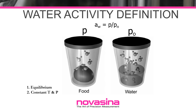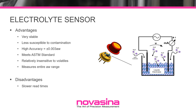Water activity is measured by equilibrating the liquid phase water in the sample with the vapor phase water in the headspace of a closed chamber, and measuring the equilibrium relative humidity in the headspace using a sensor. The relative humidity can be determined using a resistive electrolytic sensor, a chilled mirror sensor, or a capacitive hygroscopic polymer sensor. Instruments from Novasina, like the Lab Master Neo, utilize an electrolytic sensor to determine the equilibrium relative humidity inside a sealed chamber containing the sample.